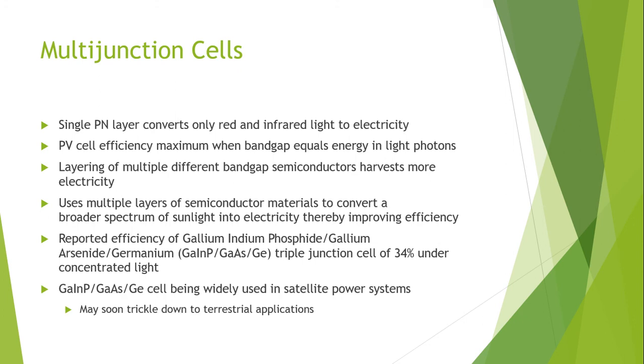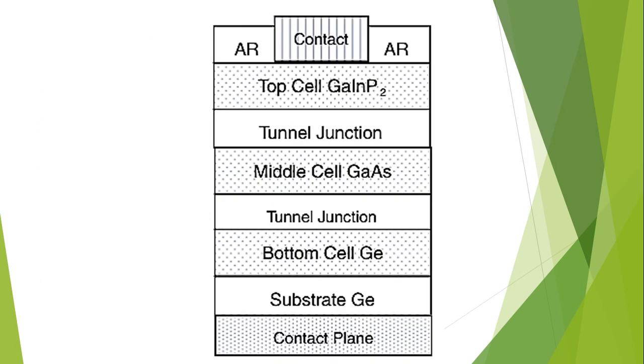The gallium indium phosphide, gallium arsenide, and germanium cells are being widely used in satellite power systems and efforts are being made so that they may soon trickle down to terrestrial application. This is an example of multijunction cell which has different layers and each layer, for example this layer, will absorb certain bands or colors of sunlight and the remaining is transferred to the lower residing cell.